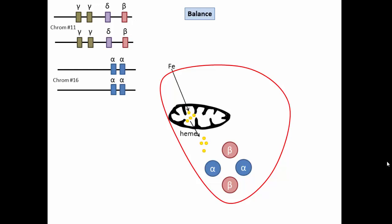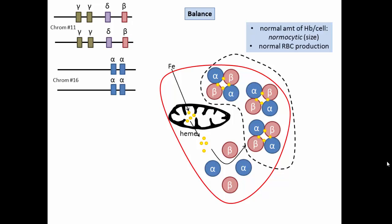There is also communication with iron uptake and heme synthesis in the mitochondria so the ratios work out and hemoglobin is assembled without any leftover potentially toxic components. This results in cells with the normal amount of hemoglobin per cell, and because the amount of hemoglobin influences the size of the cell, the cell comes out normocytic, normal sized.